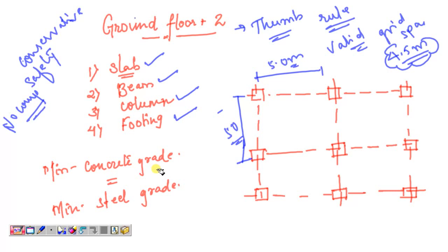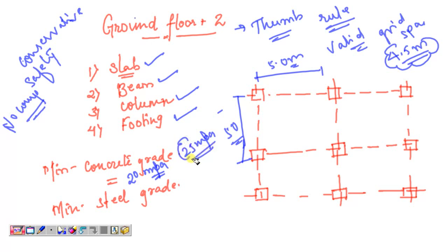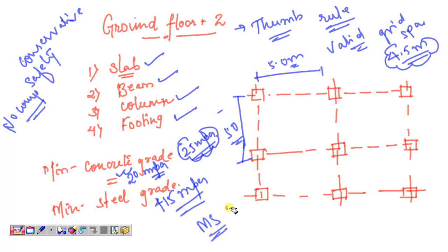The minimum grade of concrete should be M20 MPa; if you can get M25 that is better, but M20 is acceptable as the minimum. The minimum grade of steel should be 415 MPa. Please do not use mild steel MS250 for this design.